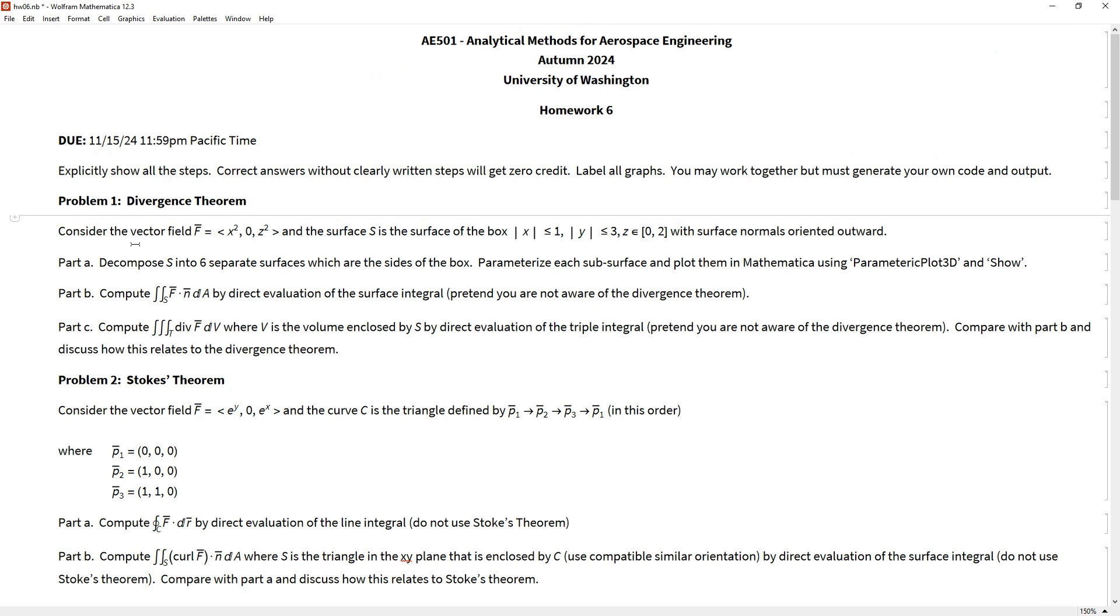Problem one is pretty straightforward - it's basically just take the divergence theorem, I'm going to give you a vector field here and a surface here, and you're just applying the divergence theorem. Once you watch the video I do an example of this which is very similar with a different vector field and surface. It's basically looking at a surface which is a box so there are six different sides to it. Part a is basically just how do you parameterize each of those six different sides individually, and then for part b go ahead and compute this flux integral over those six surfaces and add them all together.